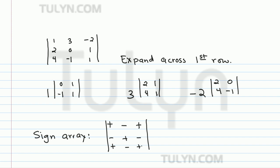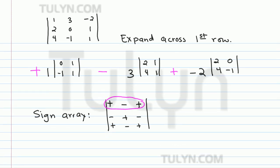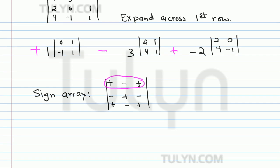Now, since we're expanding across the first row, we know that the sign array tells us that the signs should go plus, minus, plus. So now we've pretty much set up the determinant, and what's left over is just to solve.